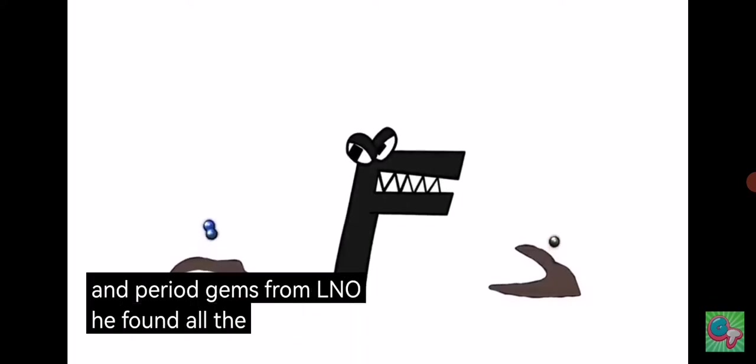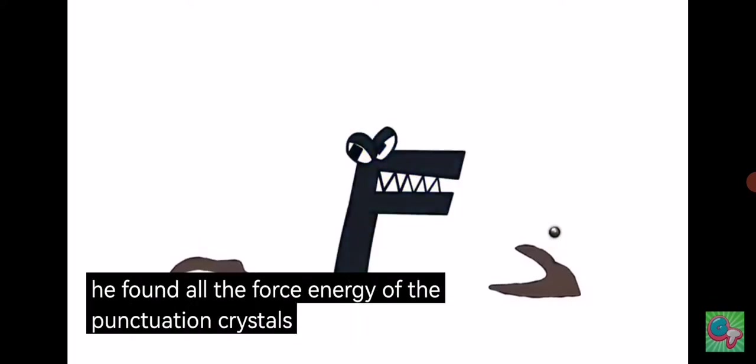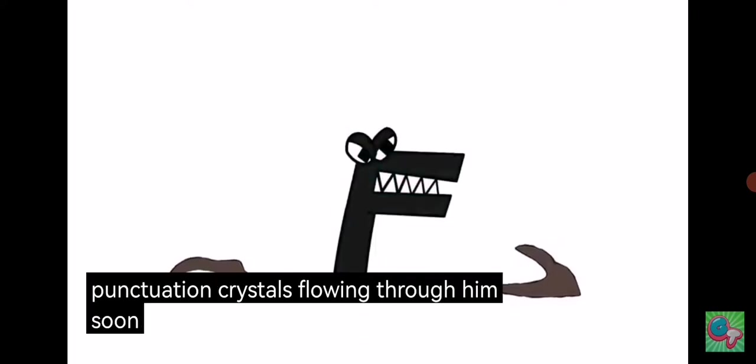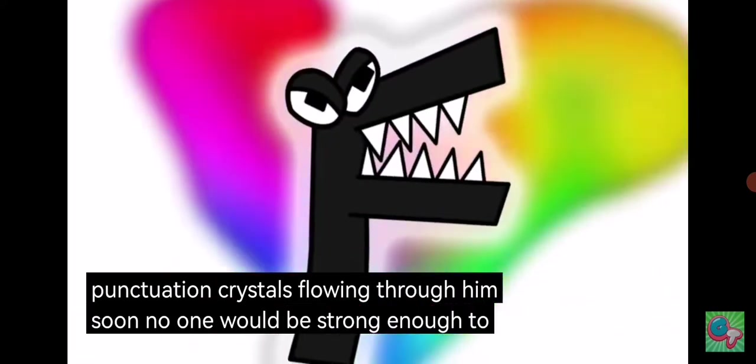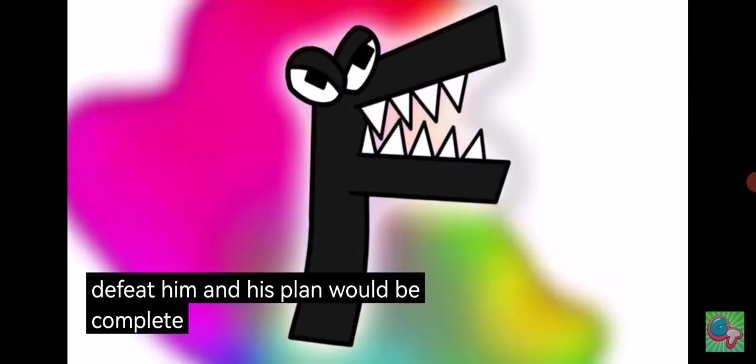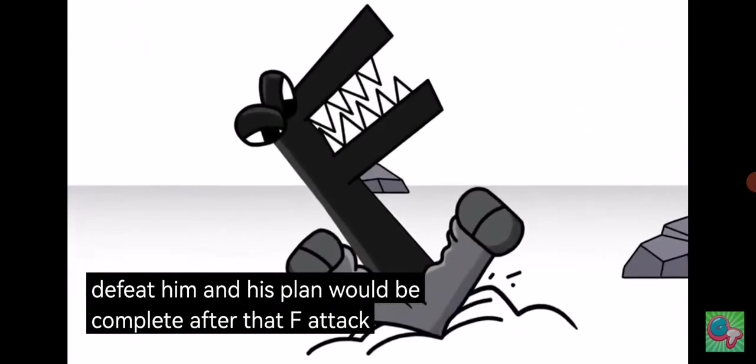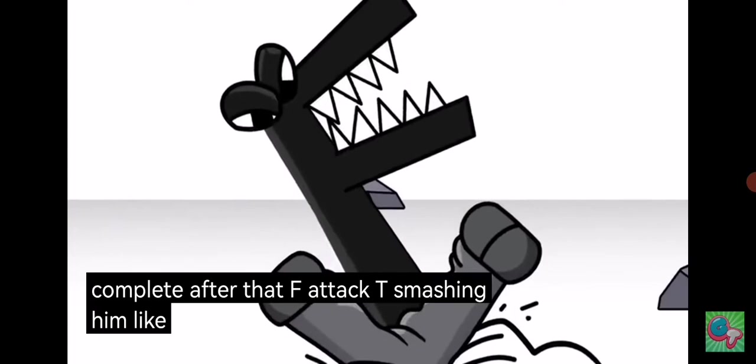He felt all the force energy of the punctuation crystals flowing through him. Soon no one would be strong enough to defeat him, and his plan would be complete. After that, F attacked T, smashing him like a hammer into the ground.